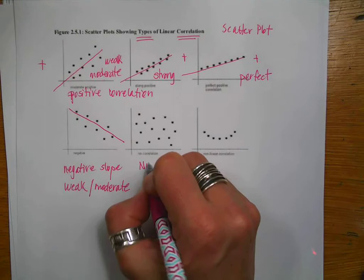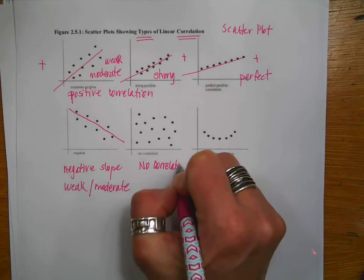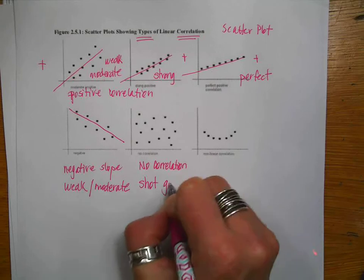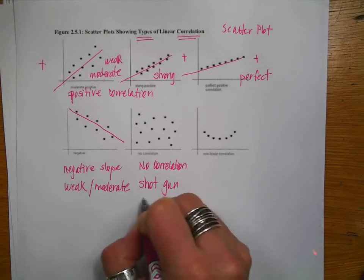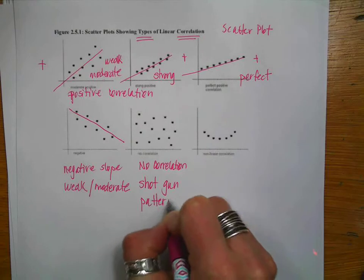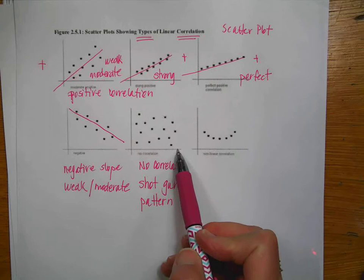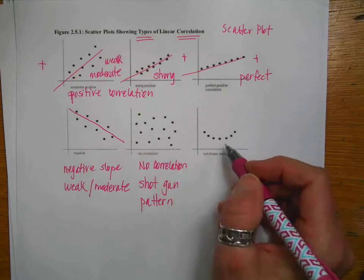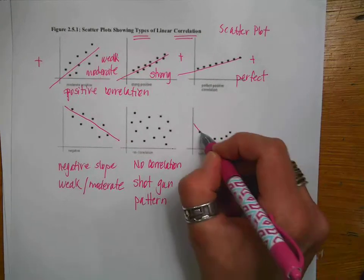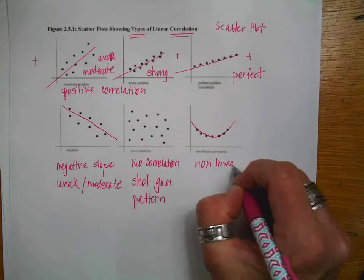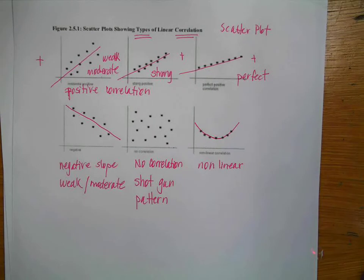This one is my favorite. It is no correlation. And this one reminds me of a shotgun pattern. So when you shoot a shotgun, my husband is a bird hunter. So when you shoot a shotgun pattern, it creates really no pattern at all. And then this one is what's called non-linear.